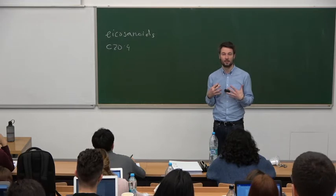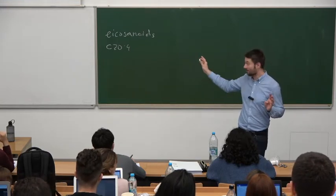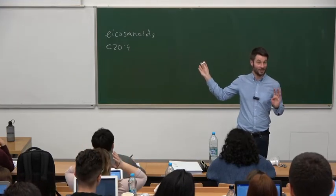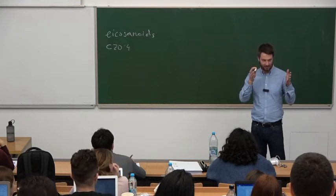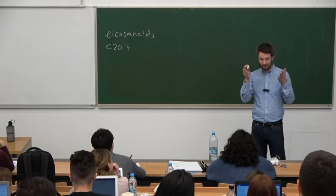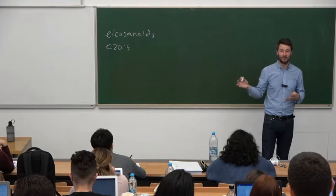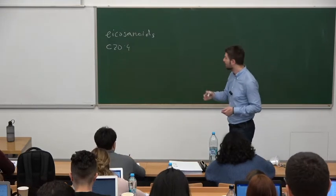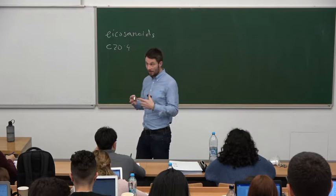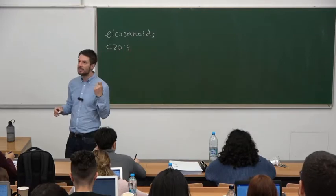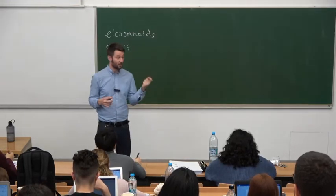What does the omega notation tell us? Omega is the last letter of the Greek alphabet, denoting the last carbon. The six means the first double bond from the end of the molecule — not from the beginning. Carbon number one is the carboxyl group, which has the highest priority in naming. So omega-6 means the first double bond is on the sixth carbon from the end of the molecule.